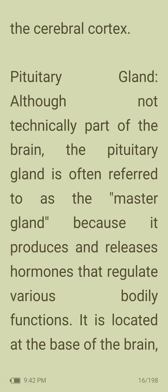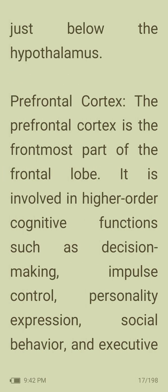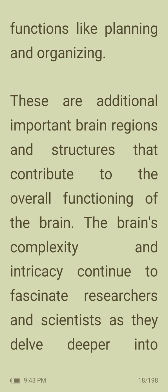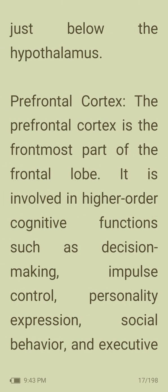Pituitary gland: although not technically part of the brain, the pituitary gland is often referred to as the master gland because it produces and releases hormones that regulate various bodily functions. It is located at the base of the brain, just below the hypothalamus. Prefrontal cortex: the frontmost part of the frontal lobe, involved in higher-order cognitive functions such as decision making, impulse control, personality expression, social behavior, and executive functions like planning and organizing.